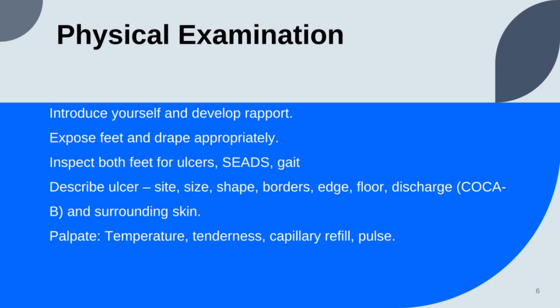When you find an ulcer, examine it: describe the site, location, shape, borders, edge, and floor. If there's any discharge present, classify the discharge by color, odor, consistency, amount, and whether there's blood. Also check the surrounding skin.